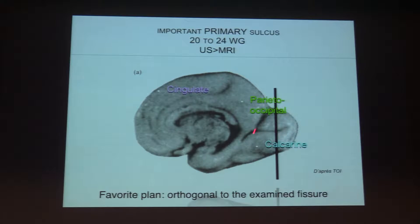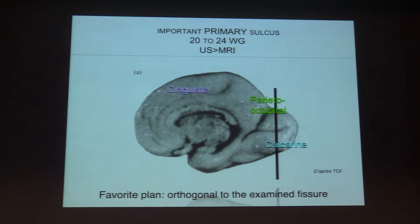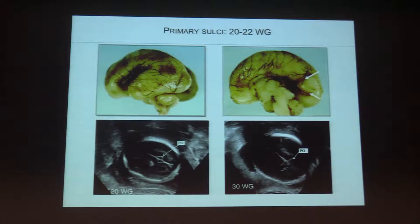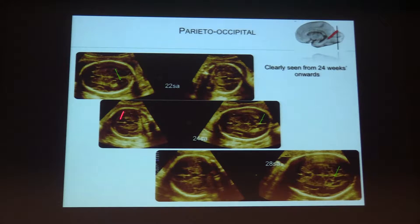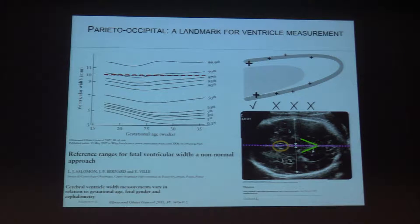To understand the best way to image those fissures, you will have a better view if you are orthogonal to the fissure. For example, to correctly visualize the parieto-occipital fissure you need to provide an axial plane. As you can see here on this classical view of the fetal brain, here is the parieto-occipital fissure.